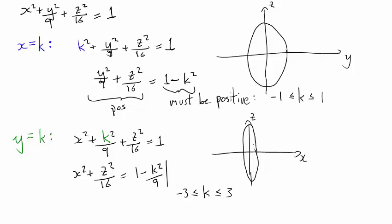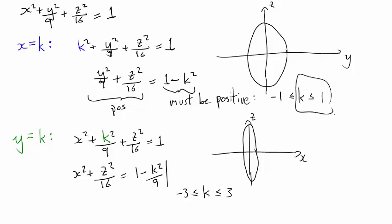You might want to think about what happens to the ellipses as you change k. For instance, what happens in an extreme case — what if k equals 1, or k equals minus 1? That's a good question worth considering.